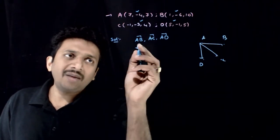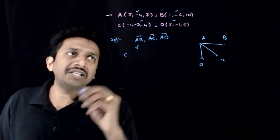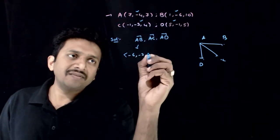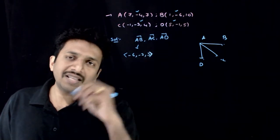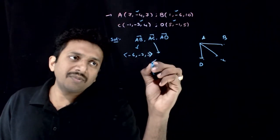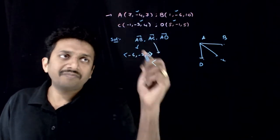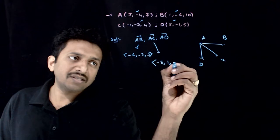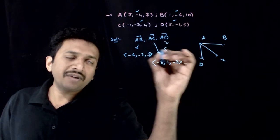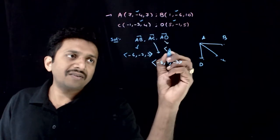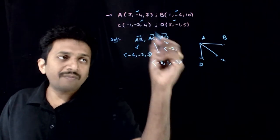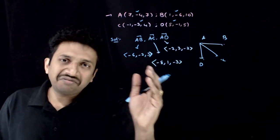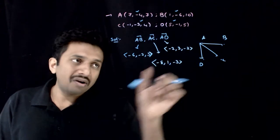What is AB? AB is nothing but B minus A. The direction numbers are: 1 minus 7 is minus 6, minus 6 plus 4 is minus 2, 10 minus 7 is 3. For AC, which is C minus A: minus 1 minus 7 is minus 8, minus 3 plus 4 is 1, 4 minus 7 is minus 3. For AD, which is D minus A: 5 minus 7 is minus 2, minus 1 plus 4 is 3, 5 minus 7 is minus 2. These are the three direction ratios of these vectors.